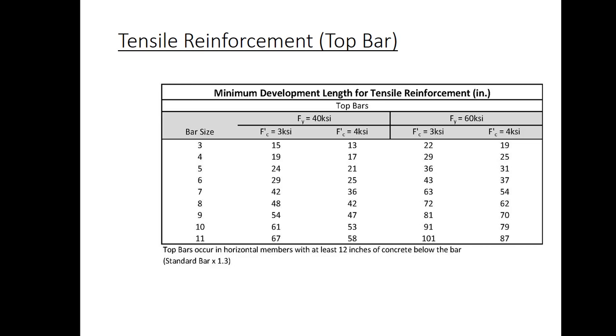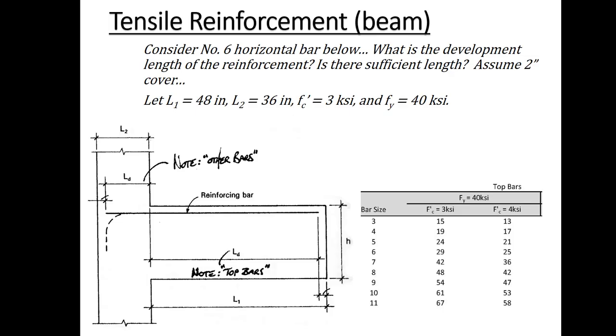This one right here is the similar table, except that it works for top bars. And just as a reminder, top bars, I already defined this, they're horizontal members with at least 12 inches of concrete below the bar, and it's simply the previous table multiplied by a factor of 1.3.